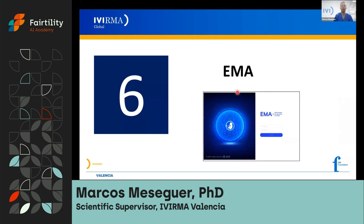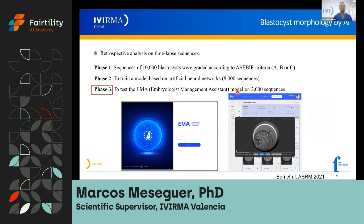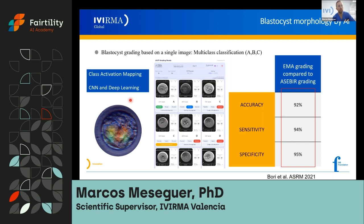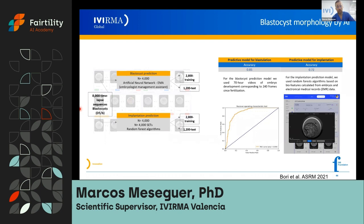Another system we have been testing is the IMA, connected to the embryoscope, as part of the PhD work of Lorena Bori. We checked first how it was related with morphology evaluation, comparing the classification done here at IVA Valencia — ACAB grading — with the accuracy done by the IMA score. We observed an accuracy of 92% in morphology classification, showing it was quite similar to our criteria. This classification was done using convolutional neural networks. We also checked the accuracy of this score for prediction of blastulation — 0.85 or 85% — and for prediction of implantation — 72% or 0.72. For training and testing, we used 4,000 embryos for each prediction.